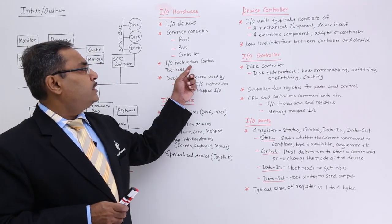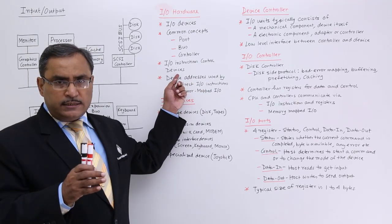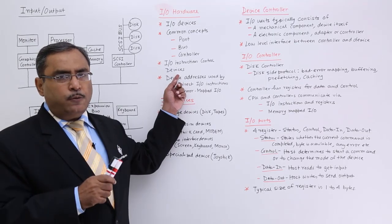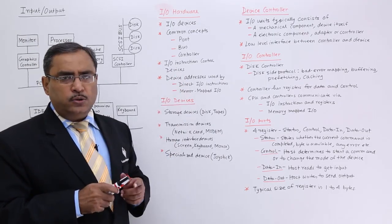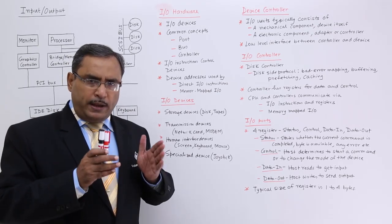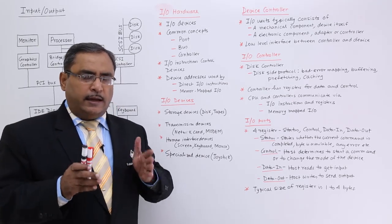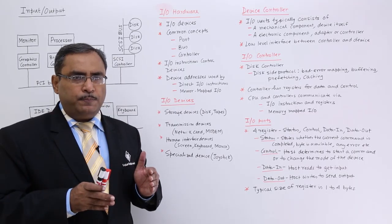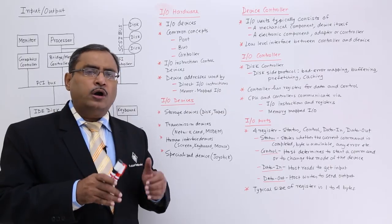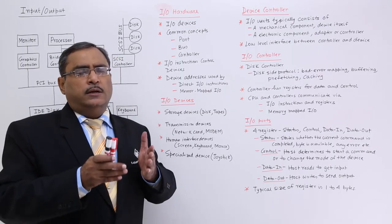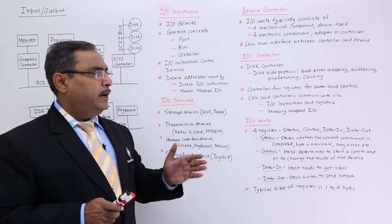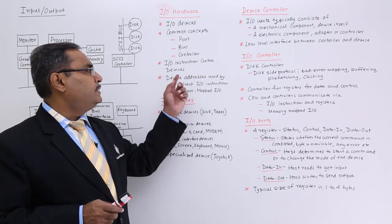We have I/O instruction control devices — also known as programmable interfacing devices — which handle communication between the CPU and the respective I/O ports. These devices have some ports connected, and there are control words with which you can decide whether a port will be used as an input port or output port, and what control signals are to be initiated.